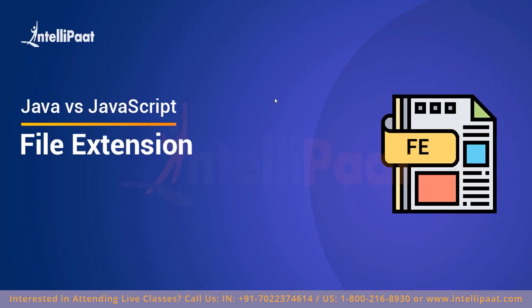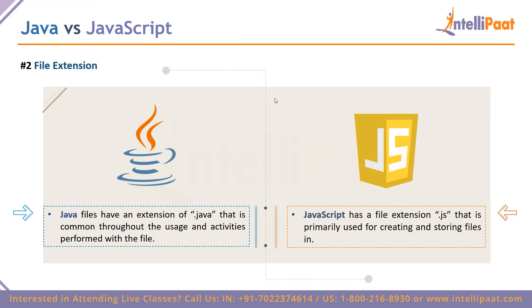Coming to the second point — file extensions. All files when working with Java will have a .java extension. Whatever is contained in those files, if it's a Java file, it's going to have a .java extension. In the case of JavaScript, the extension is .js — JS is short for JavaScript — and this is primarily used for creating and storing all data in JavaScript files.